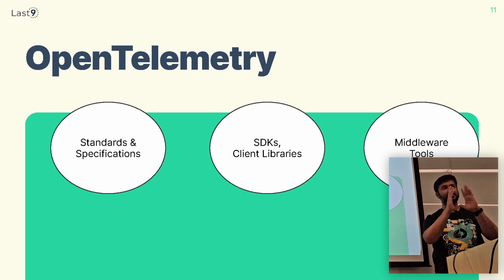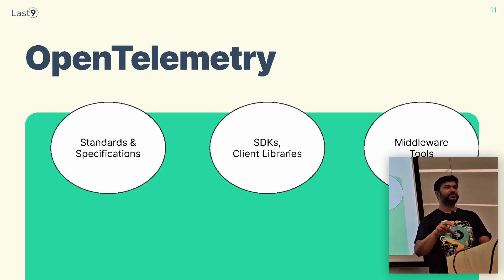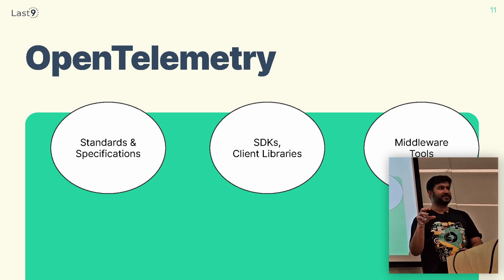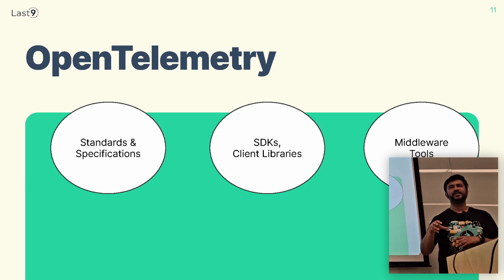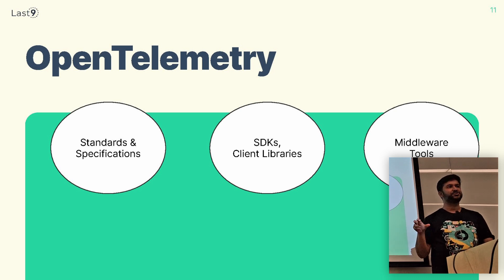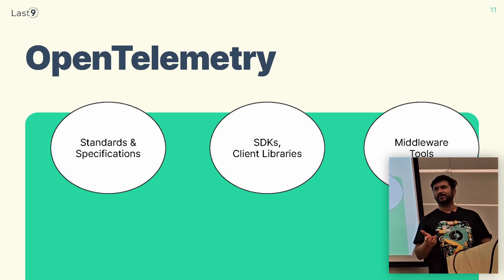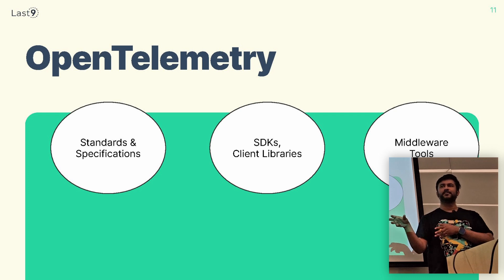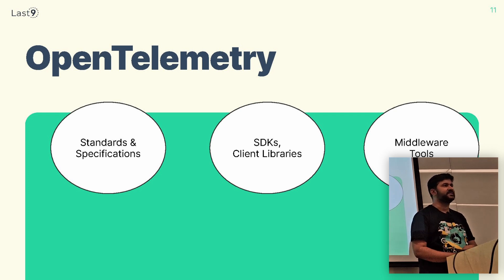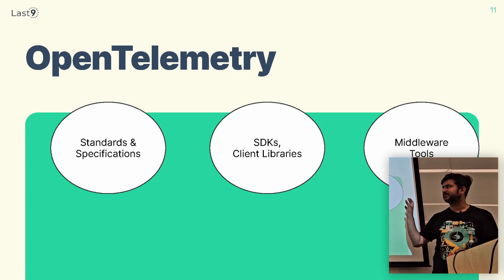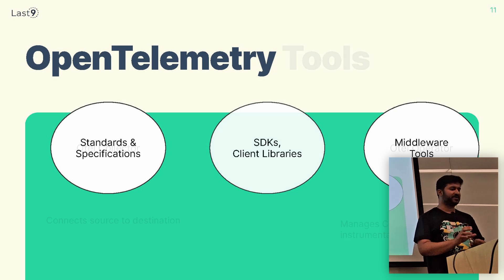If you think about the components of OpenTelemetry, there are standard specifications as a separate area, then SDKs and client libraries for specific languages — Ruby, Python, Golang, and others. There are also middleware tools which you can use with Kubernetes or other deployment mechanisms to deploy those tools to pre-process data and send it to a destination. That's a high-level component overview of what OpenTelemetry is.